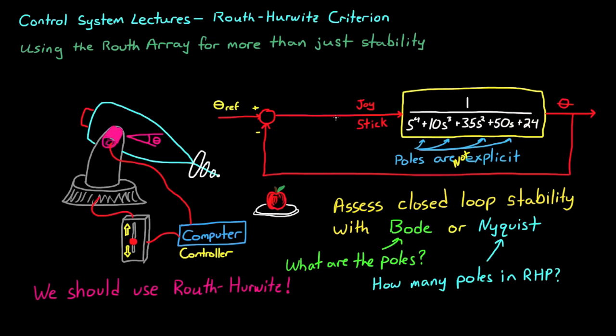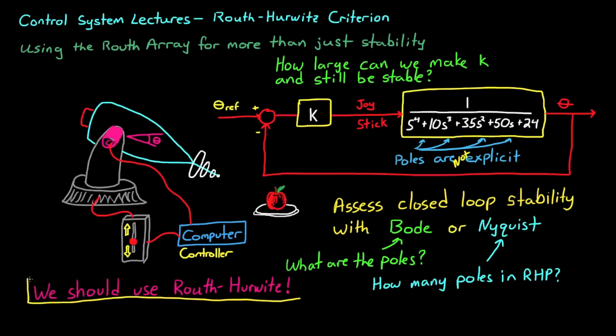But very often you're not just feeding back the output and sending the error signal directly into the plant. If you are able to get away with such a simple controller which has a gain of 1, then great. But usually you're trying to tune the gain k of a controller to get the response that you require, all while staying stable. So the question is now, can we use the same techniques with the Routh array to determine what range of gains will produce a stable system? Absolutely.